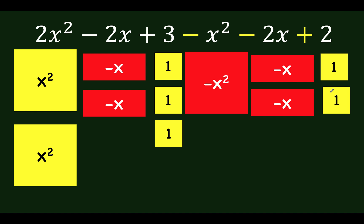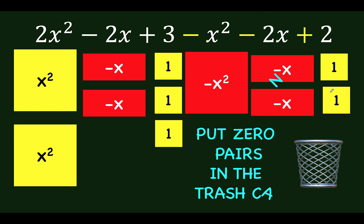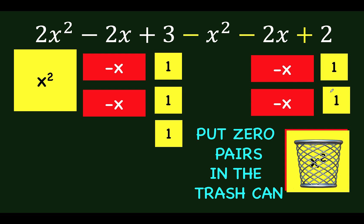Then after that, let's get our trash can and put all the zero pairs in the trash can. So let's find zero pairs. We have positive x squared and negative x squared. That's zero. And inspecting the remaining shapes, there's no zero pairs anymore that we can eliminate.